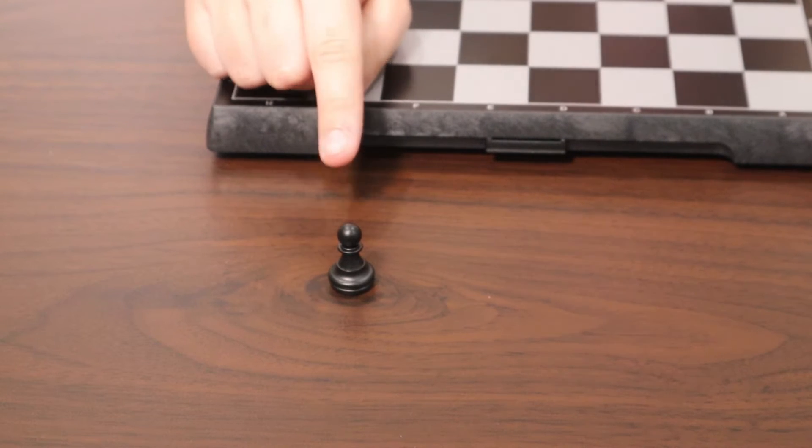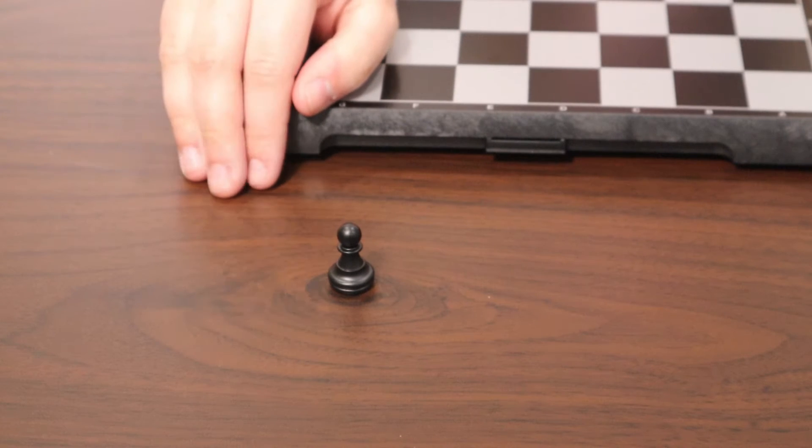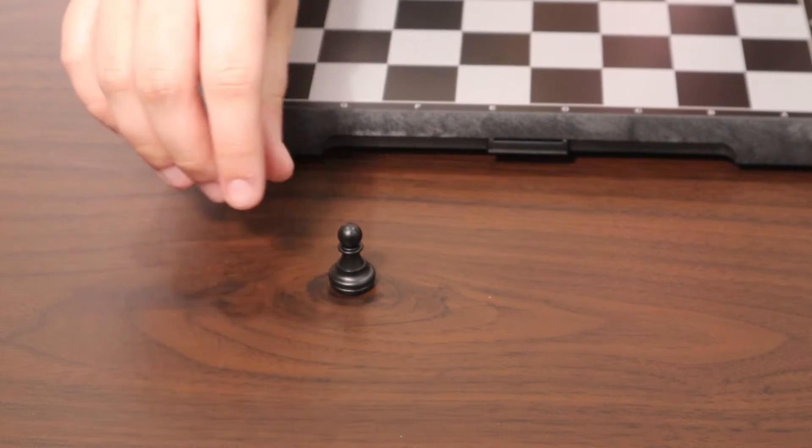This piece is called the pawn. There are eight pawns in both colors on the chess set, so there's a total of 16 pawns on the chess board.